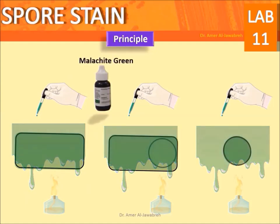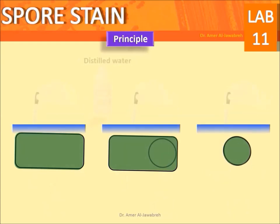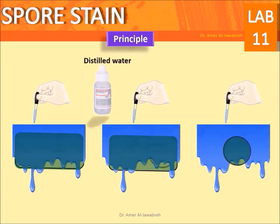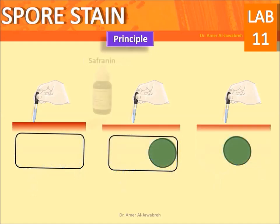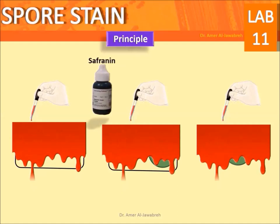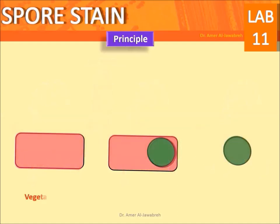Add malachite green and apply heat — all cells and spores will stain green. Add distilled water as a decolorizer — only spores will remain green. Add safranine as a counterstain — vegetative cells will stain red while spores will remain green.